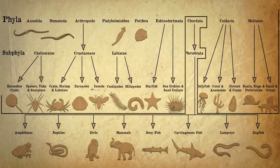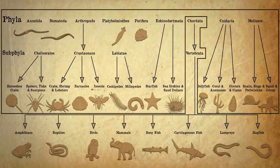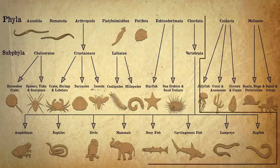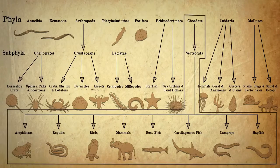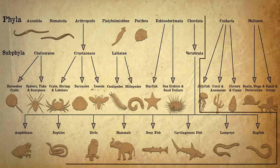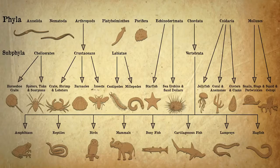All of these phyla are invertebrates, and just the chordata contain all of the vertebrates. Not all chordates are vertebrates, but all vertebrates are chordates.